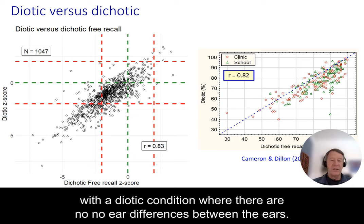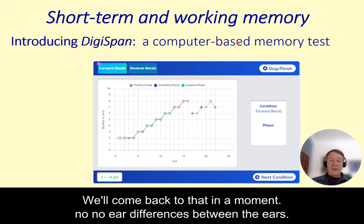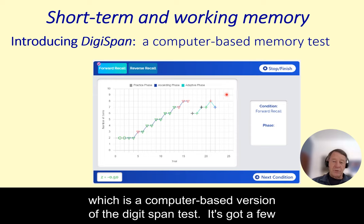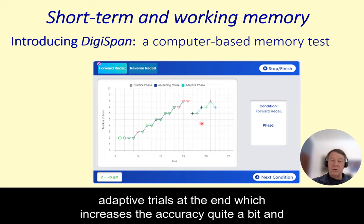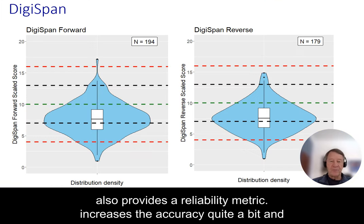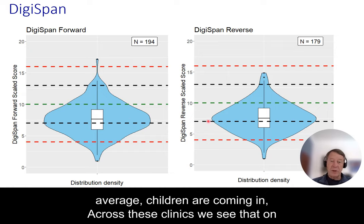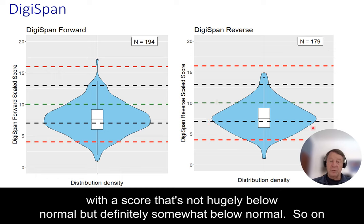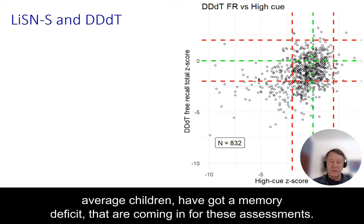We recently introduced DigiSpan, which is a computer-based version of the digit span test. It has a few adaptive trials at the end which increases accuracy quite a bit and also provides a reliability metric. Across these clinics, we see that on average children coming in — mostly children, some adults — have a score that's somewhat below normal, so on average children attending for these assessments have a memory deficit.